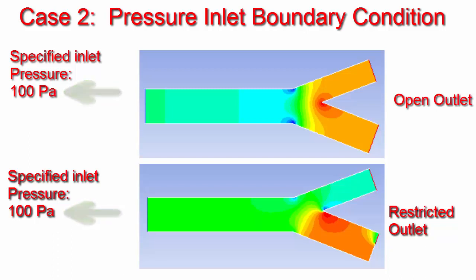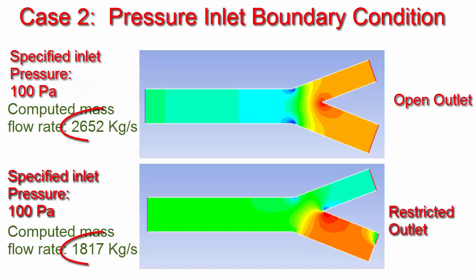However, the mass flow rate gets affected because of the geometry differences. Hence, the pressure inlet boundary condition can be used if you want to maintain a specified pressure at the inlet, but the mass flow rate could be compromised.